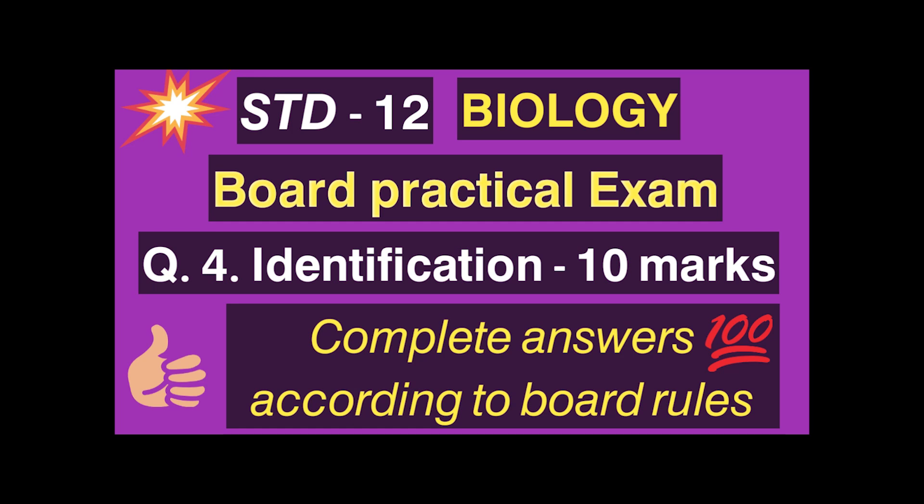Welcome dear student on my channel. In this video we will discuss regarding the 12th biology board practical exam, question number 4, which is for the identification and is worth 10 marks. In this question there are total 10 spots starting from A to J. For each spot you get three minutes, after which you have to shift to the next spot.